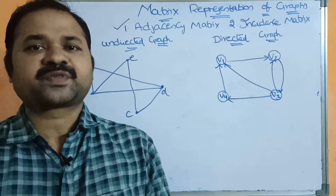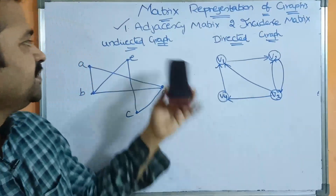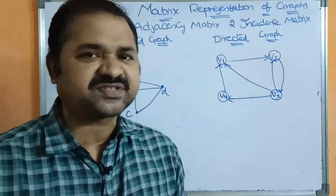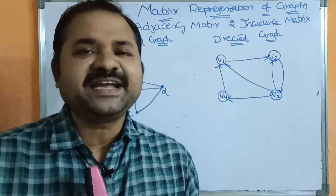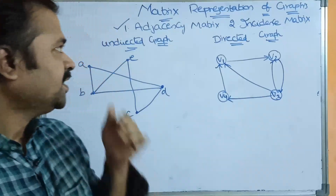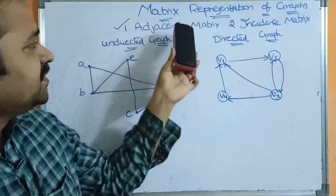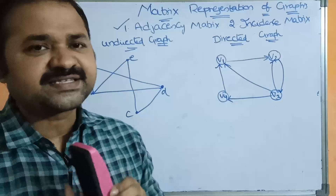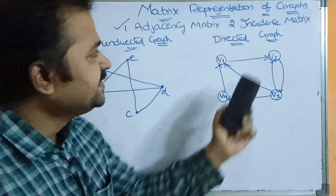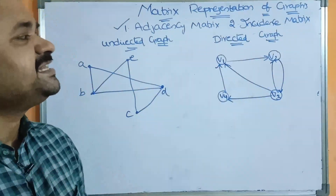In this video, we are going to discuss about matrix representation of graphs in discrete mathematical structures, DMS. Generally, we can represent graphs in two ways. The first way is adjacency matrix. The second way is incidence matrix.